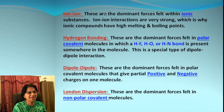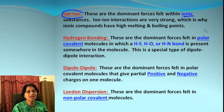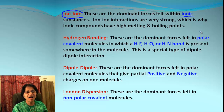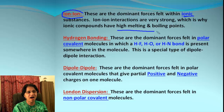The very first one is ion-ion interaction. These are dominant forces in ionic compounds. So if we know a compound is ionic, we can easily predict that there will be ion-ion interactions. And since these forces are the strongest, these compounds will have high melting and boiling points.